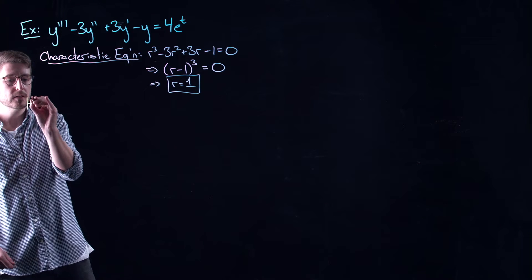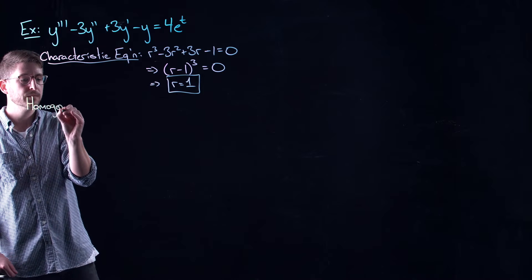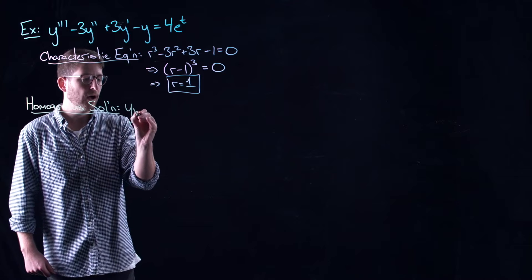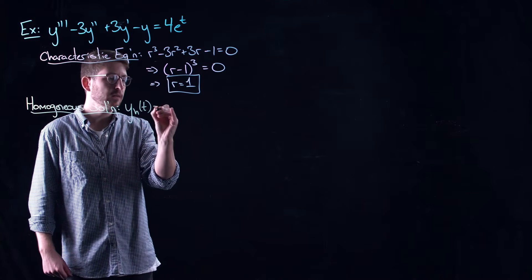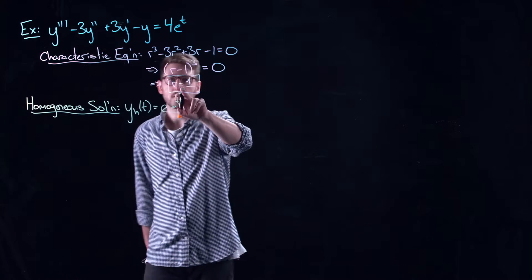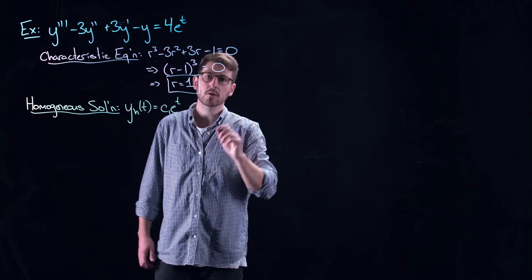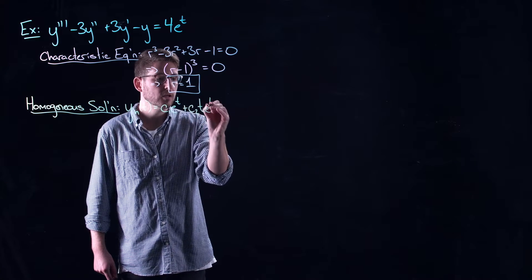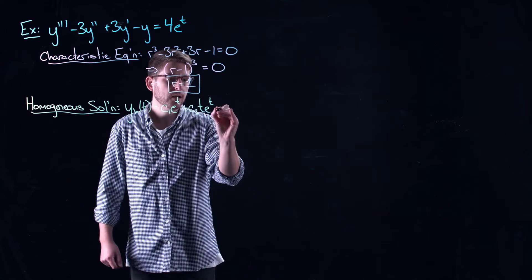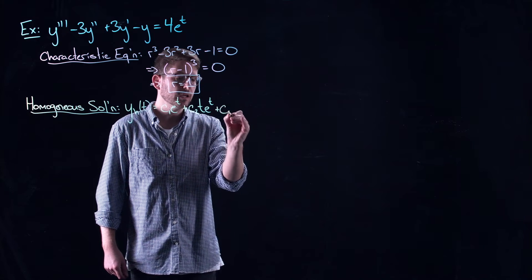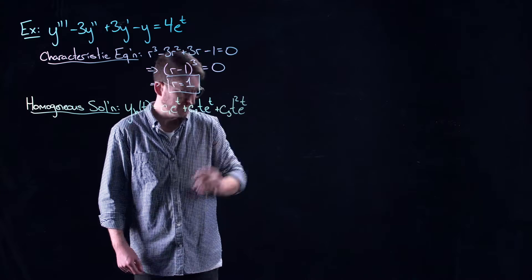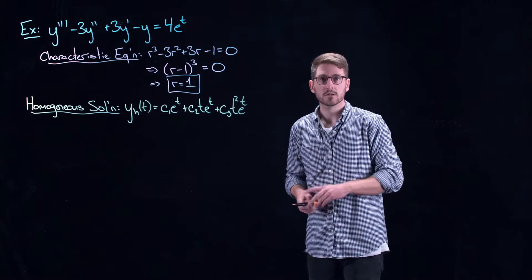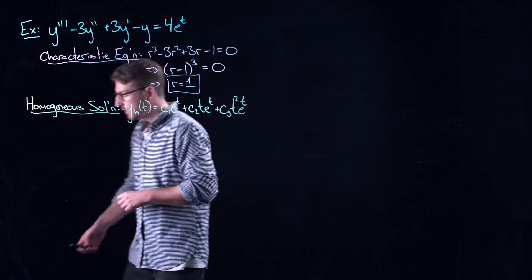Nonetheless, this gives us a homogeneous solution. We have a triple root, so this is going to give us: y_h(t) = c₁e^t + c₂te^t + c₃t²e^t. The c₁e^t comes from the first root, then with a double root we need to multiply t in — that comes from the method of undetermined coefficients — and with a triple root we get a c₃t²e^t term. That's three linearly independent solutions, and that notion of linear independence comes from the Wronskian.